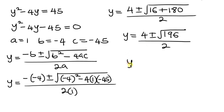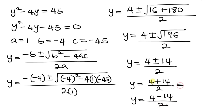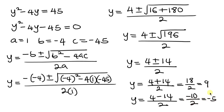The square root of 196 is 14. So there are two values of y. We have y equal to 4 plus 14 divided by 2, or y equal to 4 minus 14 divided by 2. For the first: 4 plus 14 is 18 divided by 2, which gives 9. For the second: 4 minus 14 is negative 10 divided by 2, which gives negative 5. So these are the two values of y.